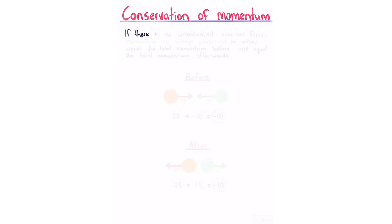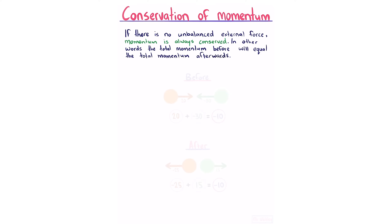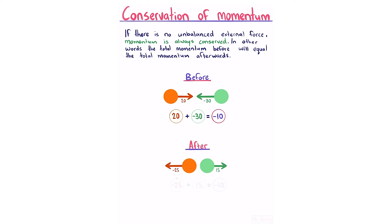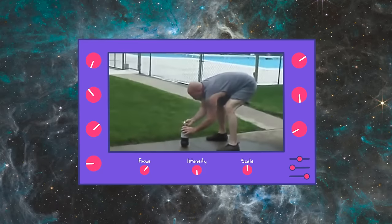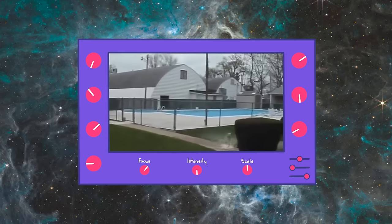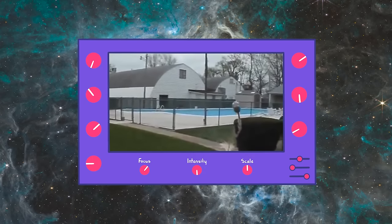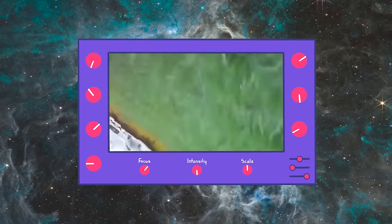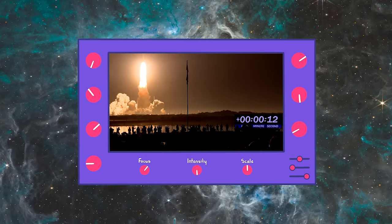Conservation of momentum. If there is no unbalanced external force, momentum is always conserved — the total momentum before equals the total momentum afterwards. For example, an orange ball with momentum 20 and a green ball with momentum negative 30 gives a total of negative 10. After collision, negative 25 plus 15 also gives negative 10, confirming momentum is conserved. A mentos-and-coke rocket demonstrates this: expelled fluid's downward momentum gives the bottle equal and opposite upward momentum.